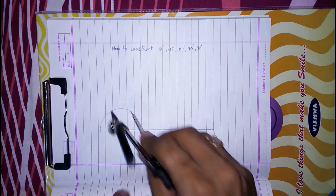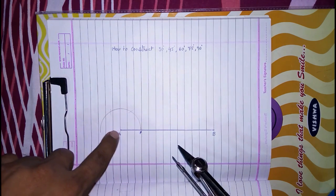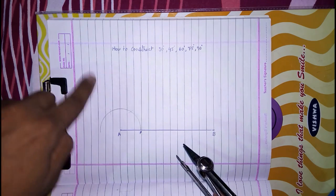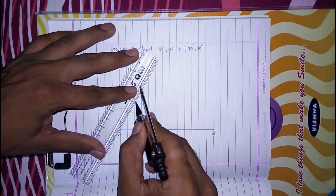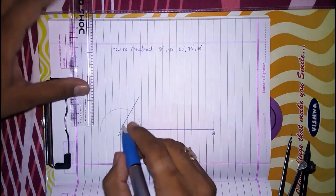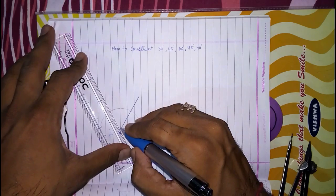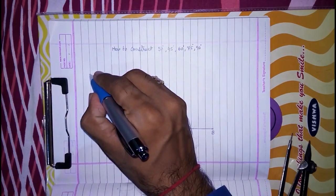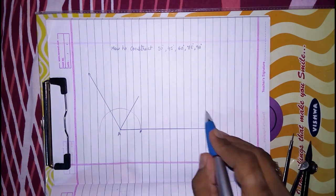Now what about 120°? Again with the same radius, taking the 60° point as center, draw an arc. If you draw a line from A intersecting this point, that will be 120°. So this is your 60° and if you construct from here, this will be your 120°.